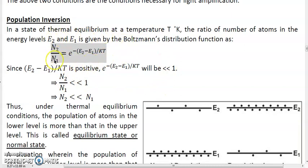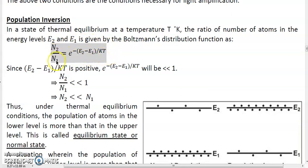According to this Boltzmann distribution function, who among these is greater — is n2 greater than n1 or n1 greater than n2? Under normal circumstances, at any given temperature t, according to the Boltzmann distribution function, which population is greater — the population of the upper level or the population of the lower level? To understand that, we will have to analyze the right hand side of this formula: e raised to minus of e2 minus e1 upon kt. If this factor is less than 1, it will imply that n2 is less than n1. If this factor is greater than 1, it will imply that n2 is greater than n1.